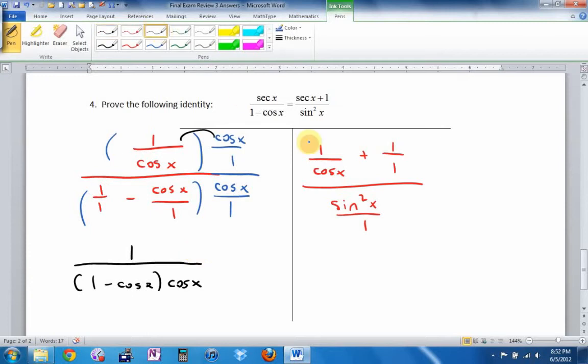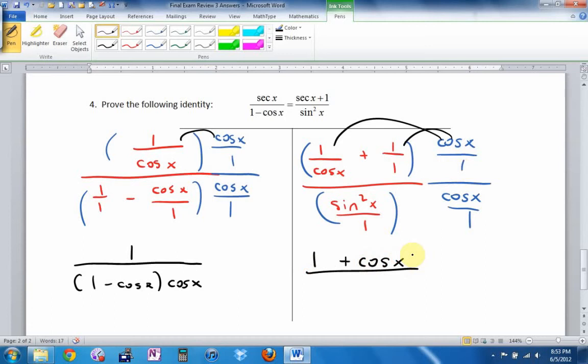Here, on the right side, I'm going to do the same thing. I have a complex fraction, so I'm going to multiply it by my common denominator, which again happens to be cos/1 over cos/1. When I do that, on the top in the first fraction, a cos is going to cancel. I'll get 1 plus. In the second fraction, there's a 1 on the bottom here and here, so it's just going to be top times top, bottom times bottom. (1 + cos) all over sin²·cos.